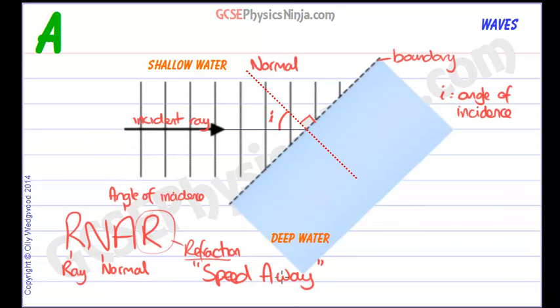Speed away. If the wave speeds up as it goes into the new area, then it will bend away from the normal line. So in this case, we are speeding up as we go into the new region, and so we are going to speed away from the normal line. We are going to bend away from the normal line, and we are going to look something like that.